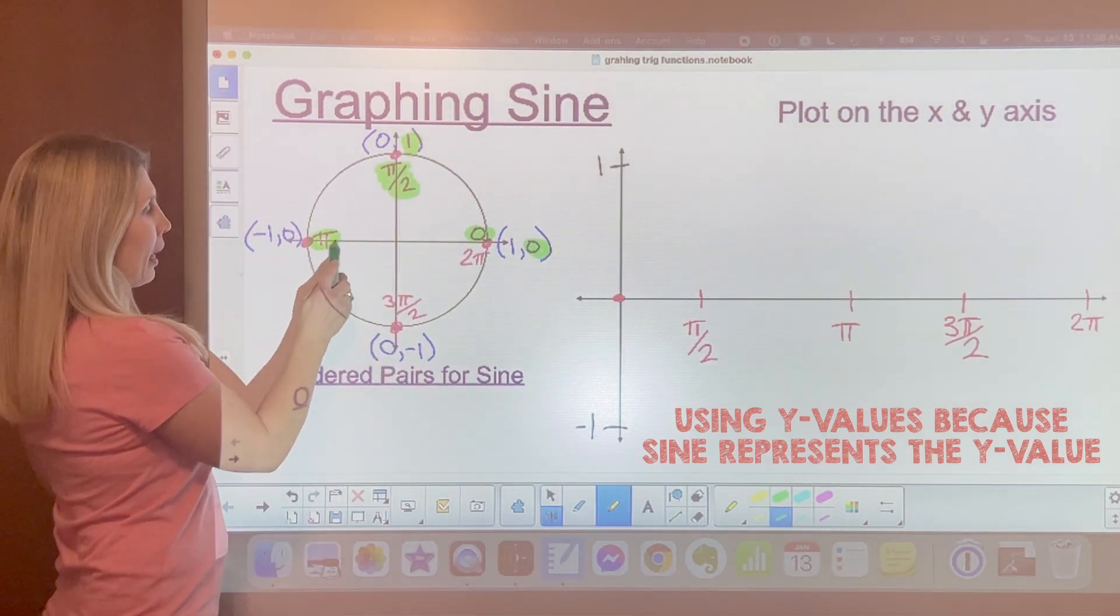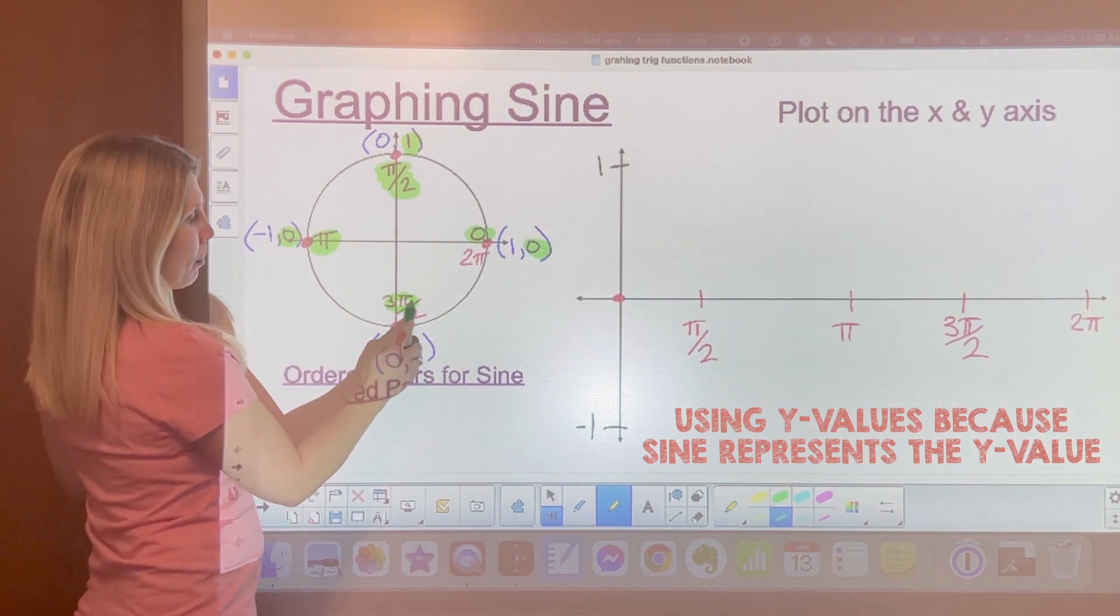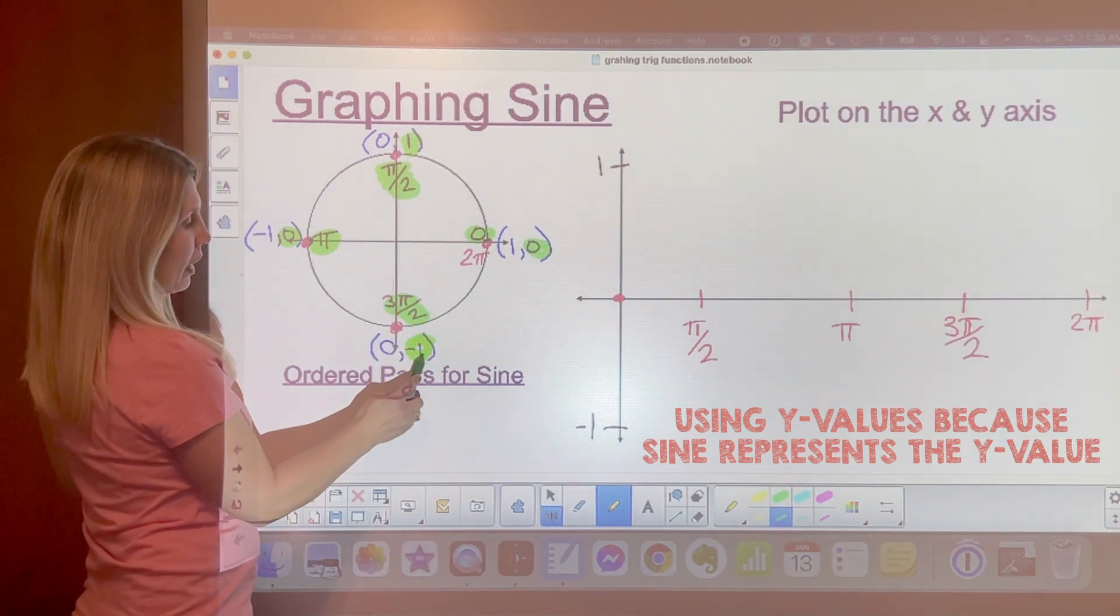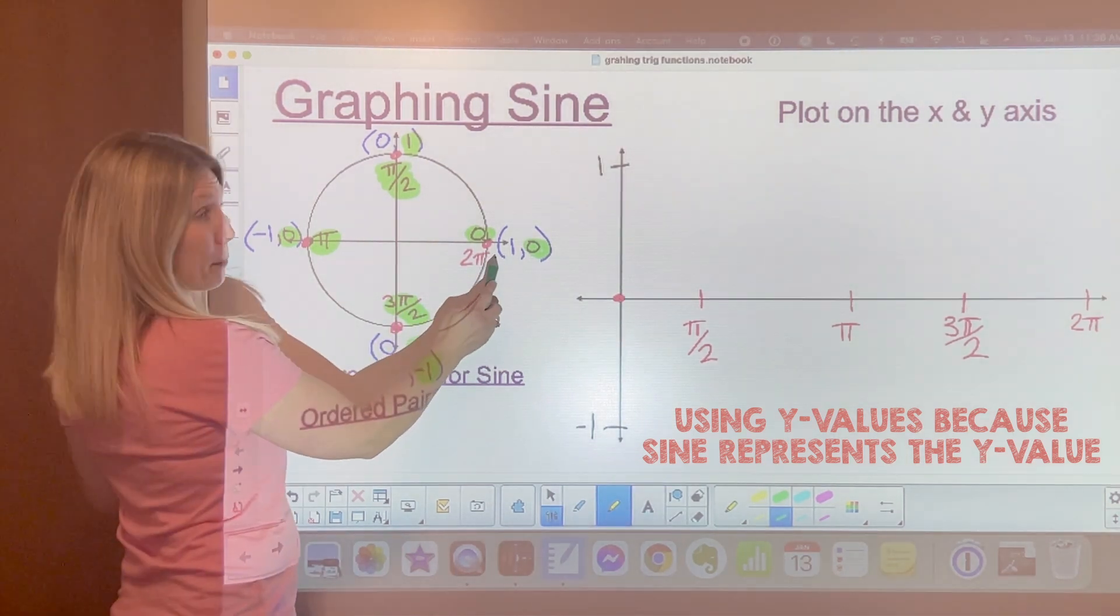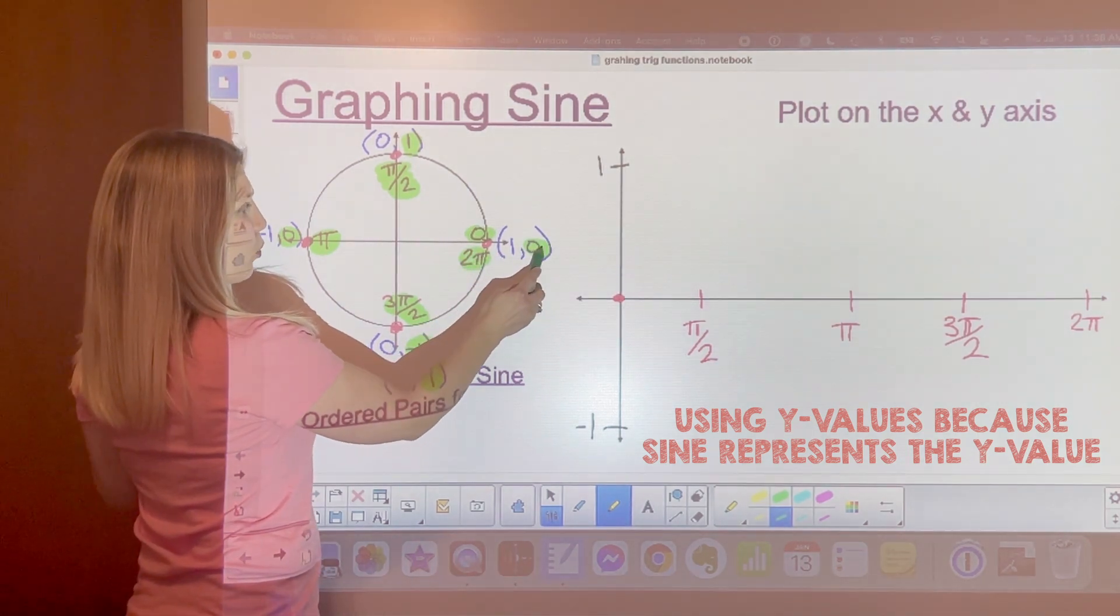At pi we have a y value of 0. And at 3 pi over 2 we have a y value of negative 1. And then we come back to the end of the circle and at 2 pi we have a y value of 0.